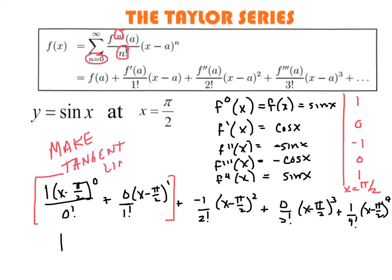Because a tangent line is just the first degree Taylor polynomial. It fits, and it's only linear. It only is x to the first. So those first two terms make the tangent line.